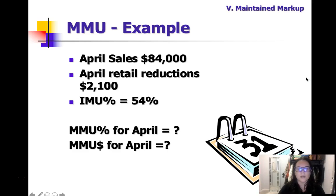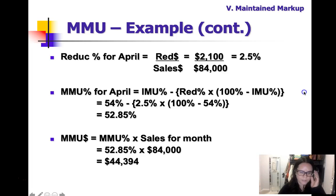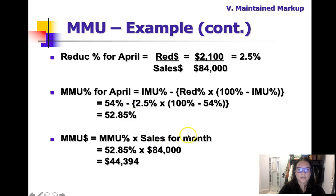April sales are $84,000, April retail reductions are $2,100, and IMU is 54%. We need to find maintained markup for April in both percentage and dollar figures. So reductions over sales: $2,100 divided by $84,000 gives 2.5%. Filling in the formula gives a maintained markup percent of 52.85%, and multiplying times $84,000 gives maintained markup dollars of $44,394.